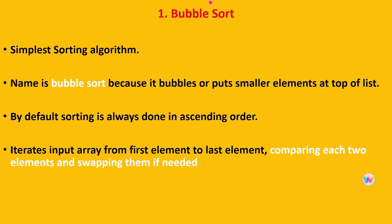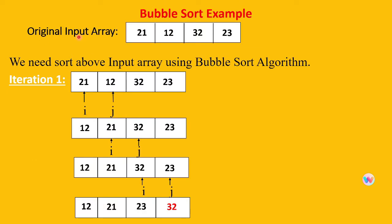Now we will see what is bubble sort. It is the simplest sorting algorithm. The name 'bubble sort' is given because it bubbles or puts the smaller element at the top of the list. By default, sorting is done in ascending order. It iterates the input array from the first element to the last element, comparing each two adjacent elements and swapping them if needed. This is the original input array: 21, 12, 32, 23.